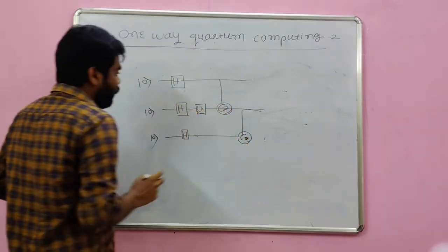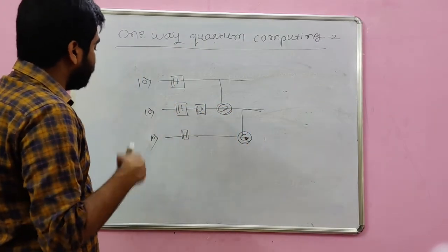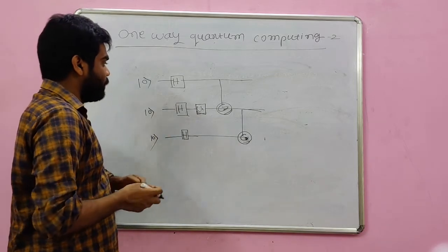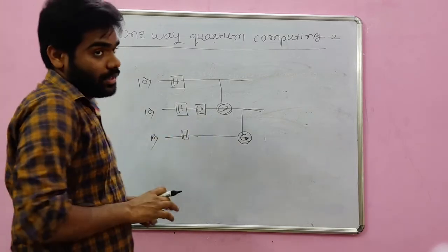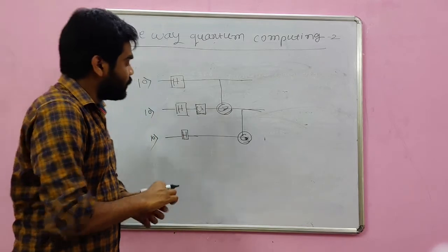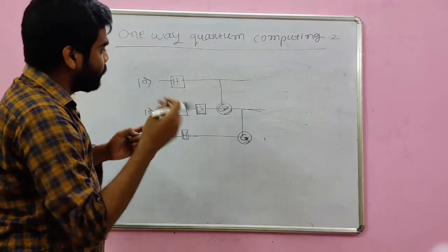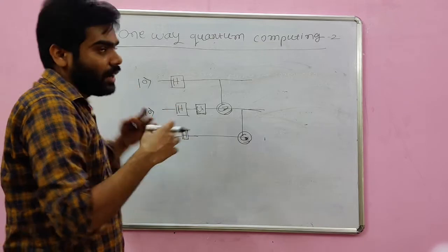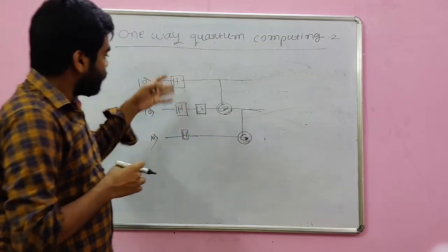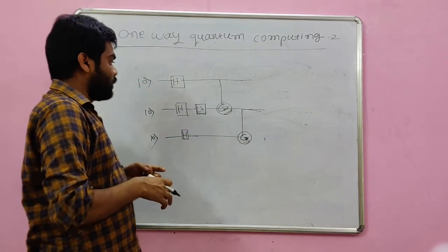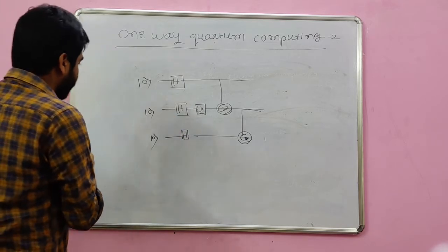This is how we will prepare the cluster states by using the C-Z gates and Hadamard gates. The C-Z gates generally produces the entanglement between the neighboring qubits. This is how we can write it.